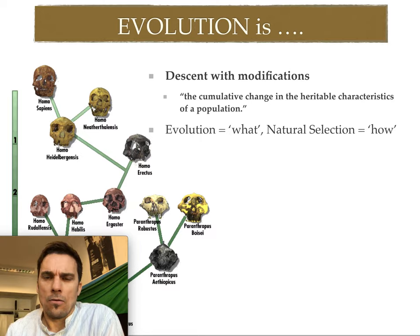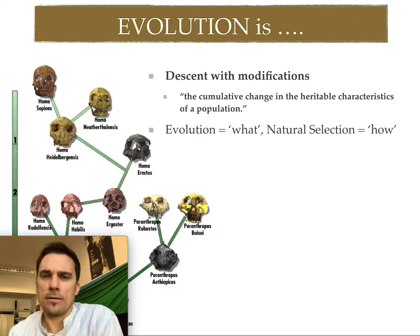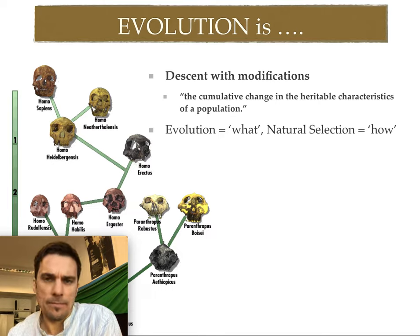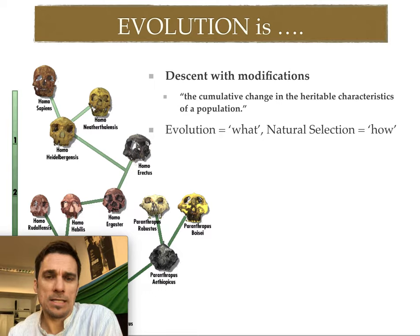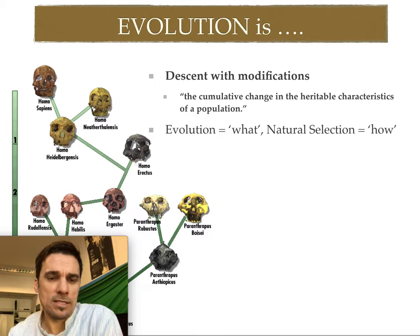So what is evolution? It's just small changes over time, essentially. How does it work? Natural selection is the best theory we have right now, and we have a lot of evidence to support the theory of natural selection and evolution.